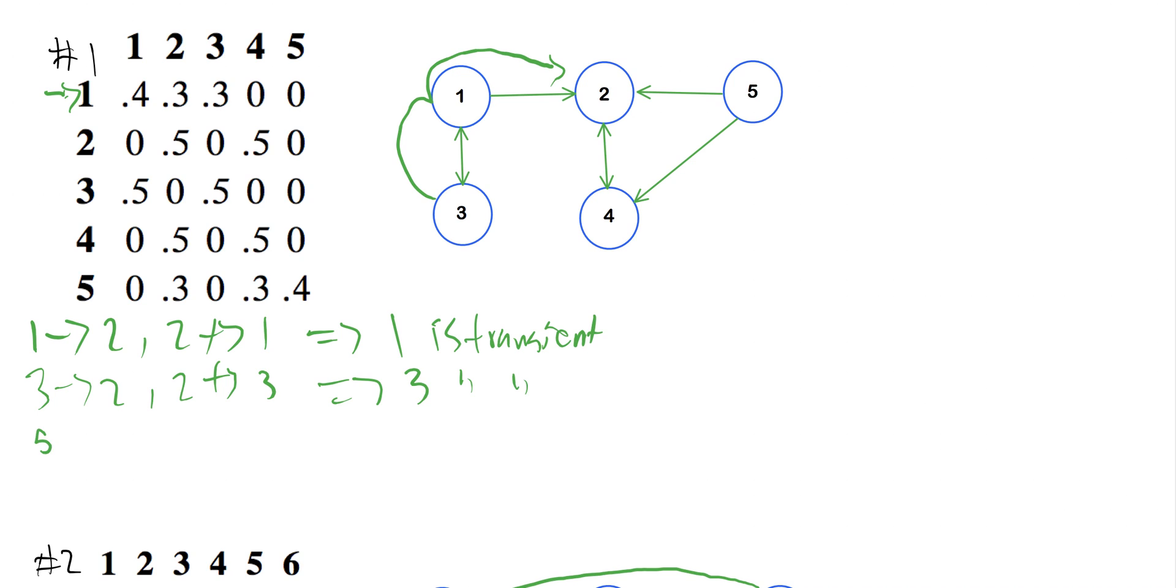And again, five communicates with two, or it communicates with four. Also, I'll just write four here down below, but two and four don't communicate with five. Therefore five is also transient.